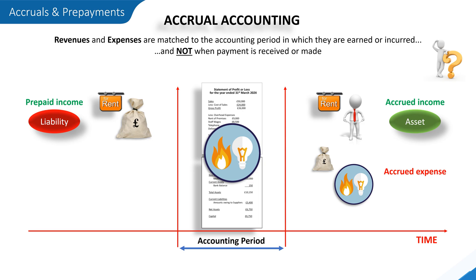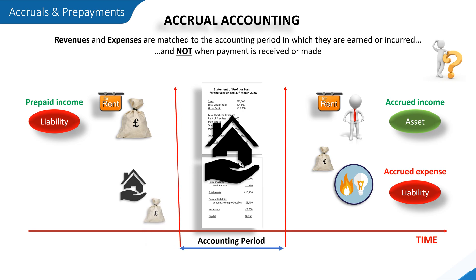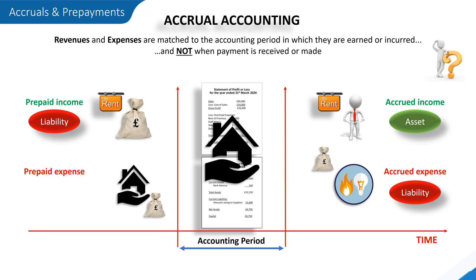Accrued expenses appear as a liability on the statement of financial position, as it's something the business owes. Finally, there are some expenses a business will have to pay in advance — an example of this might be buildings insurance. Where an expense has been paid for in advance of the accounting period it relates to, this is an example of a prepaid expense. A prepaid expense is a type of asset on the statement of financial position, resulting from a business making advanced payments for goods or services it has yet to receive.